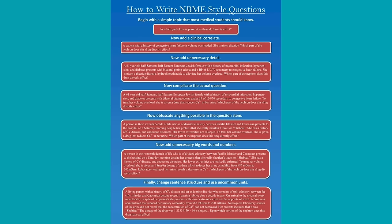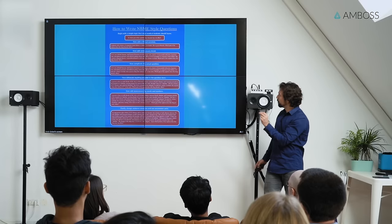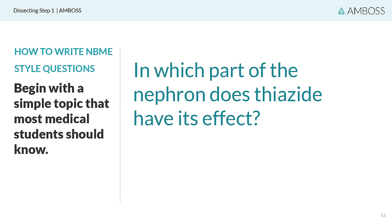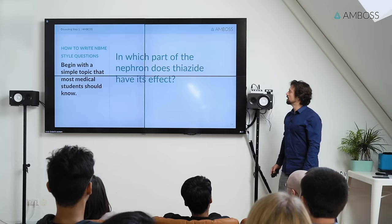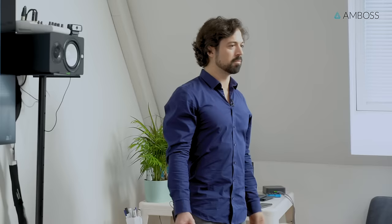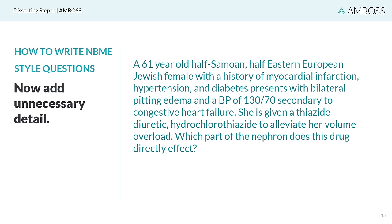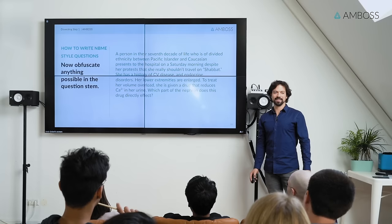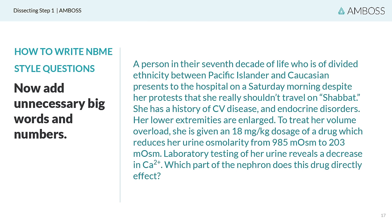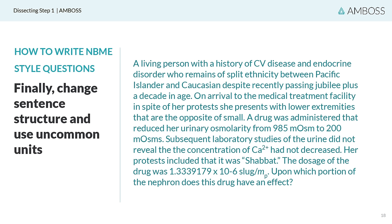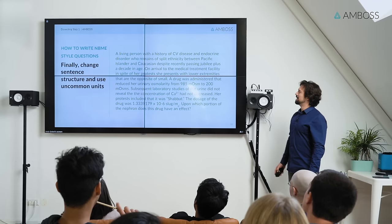The meme shows: begin with a simple topic that most medical students should know — for example, which part of the nephron does thiazide have its effect? Then add a clinical correlate. Now add unnecessary detail. Now obfuscate anything possible in the question stem. Add unnecessary big words and numbers. Finally, change the sentence structure and use uncommon units. So that basic concept comes down to a living person with a history of CV disease and endocrine disorder — blah, blah, blah.